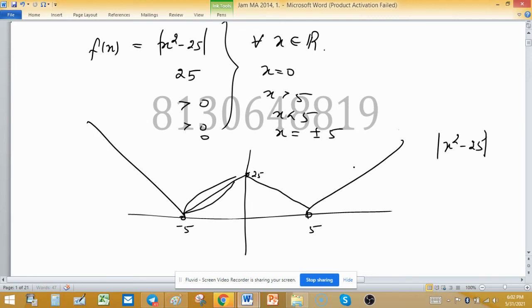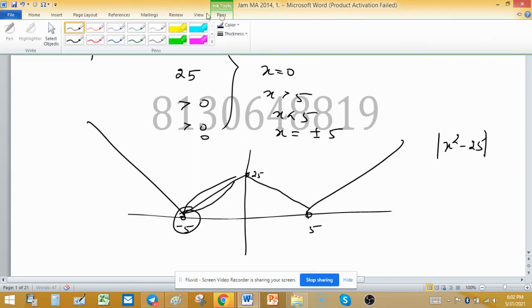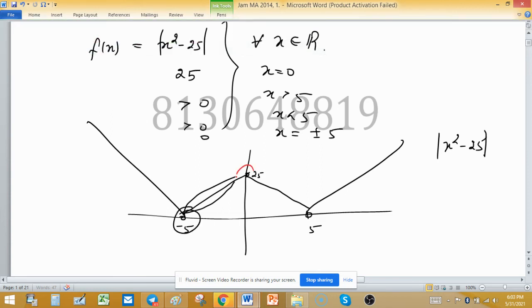So there are three points like this and as you can see my circular part, these are three points where function is attaining local extrema. This is point of maximal local maxima and these are point of local minima. And in other side you can see there is no extrema, function is always increasing.